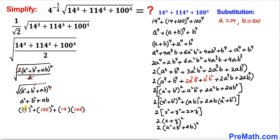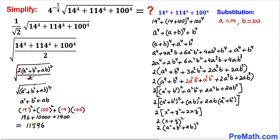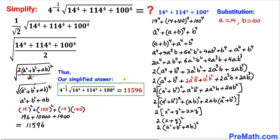Substituting back a = 14 and b = 100: 14² = 196, 100² = 10000, and 14 × 100 = 1400. Adding these up: 196 + 10000 + 1400 = 11596. So the final answer is 11596. Thanks for watching, and please don't forget to subscribe to my channel for more exciting videos!